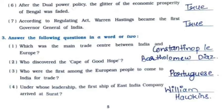First: Which was the main trade center between India and Europe? — It is Constantinople. Second: Who discovered the Cape of Good Hope? — It is Bartholomew Diaz.